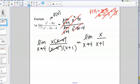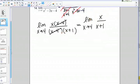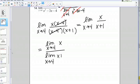These functions aren't equivalent, but their limits are. Now, we can do what we were trying to do before and separate this into the quotient. This is going to be the limit as X goes to 4 of X over the limit as X goes to 4 of X plus 1.